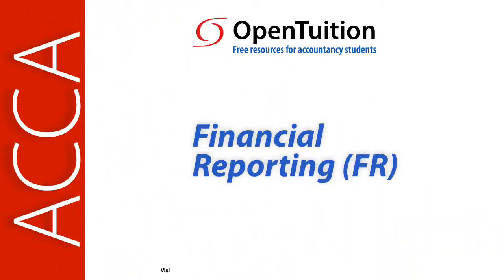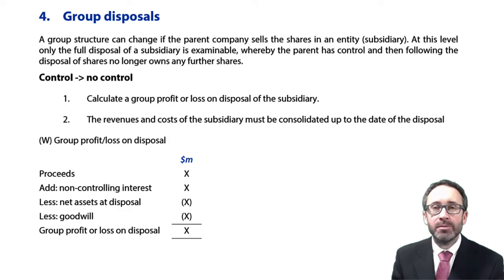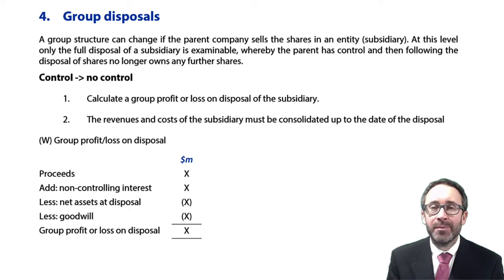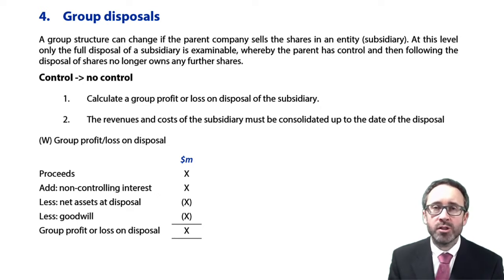This is a lecture from Open Tuition. Let's go through and finish off this chapter with a really small part of the syllabus, but one that we have seen examined a few times within section C of the exam. It's looking at a group profit or loss on disposal.